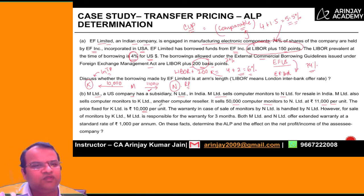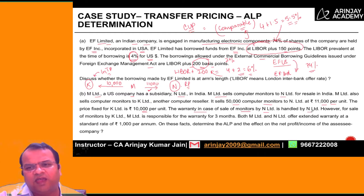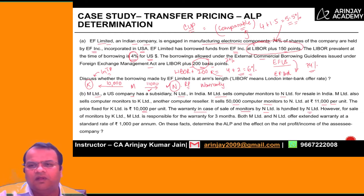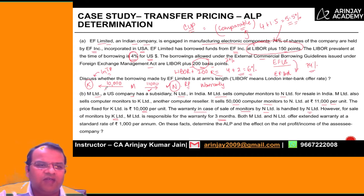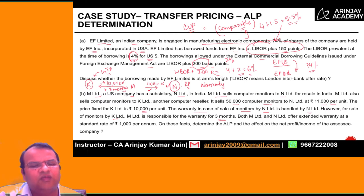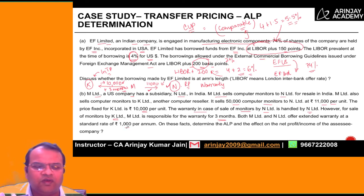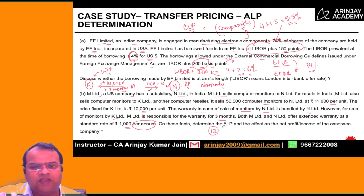But are there any differentials in terms of the contract prices? The warranty in case of sale of monitors by N Limited is handled by N Limited — N Limited bears the cost of warranty. However, for sale of monitors by K Limited, M Limited is responsible for warranty for 3 months, meaning K gets an advantage of 3 months warranty. So the 10,000 price to K includes the cost of 3 months warranty. Both N Limited and K Limited offer extended warranty at a standard rate of 1,000 per annum, so for 3 months the warranty cost would be 250.